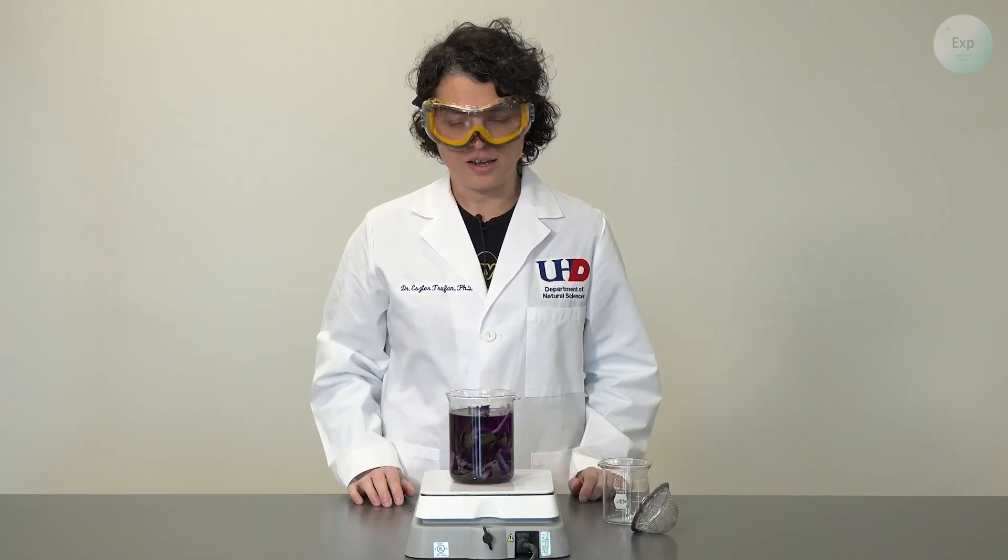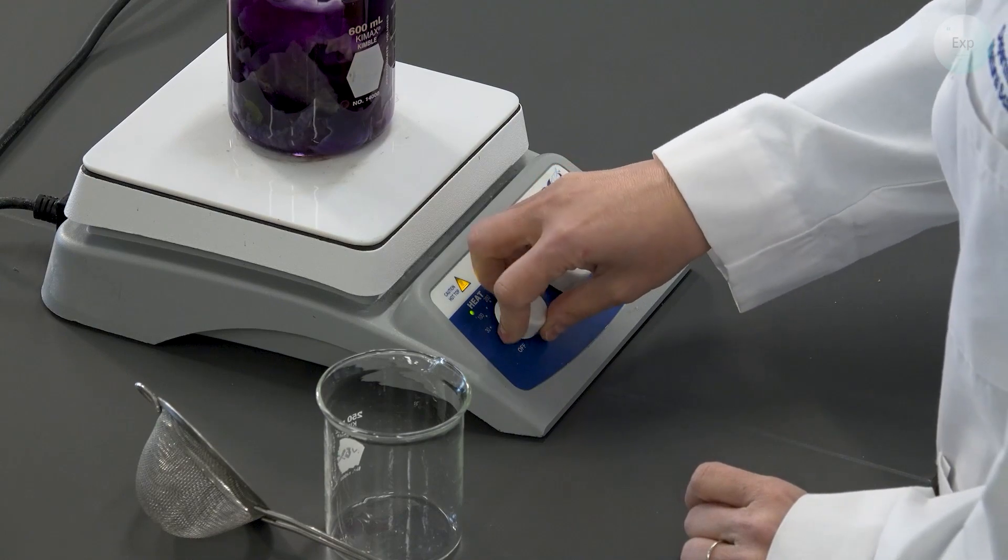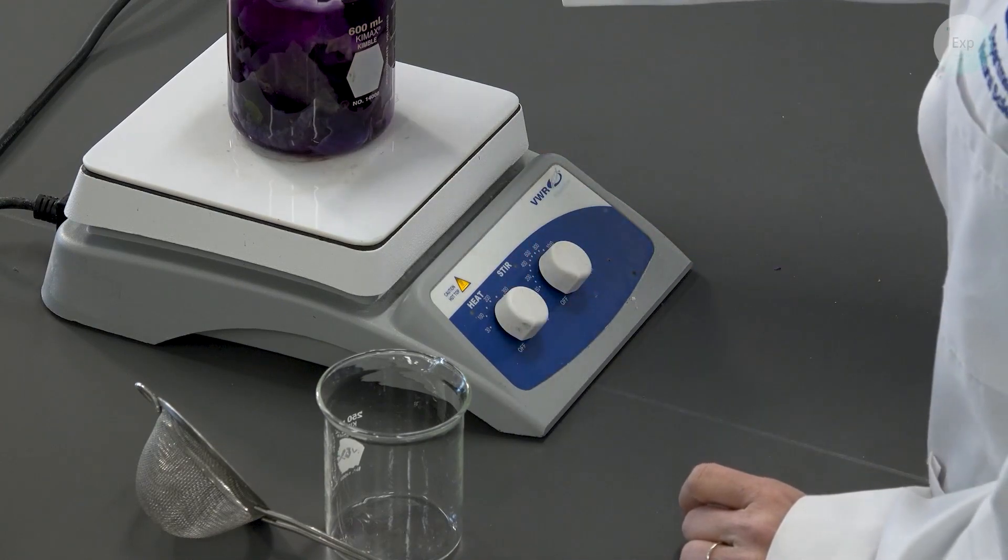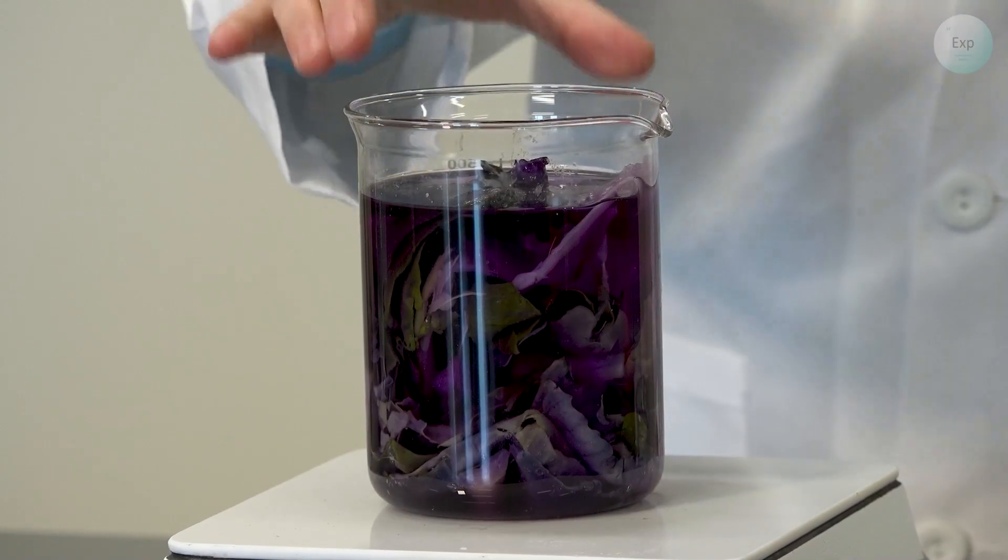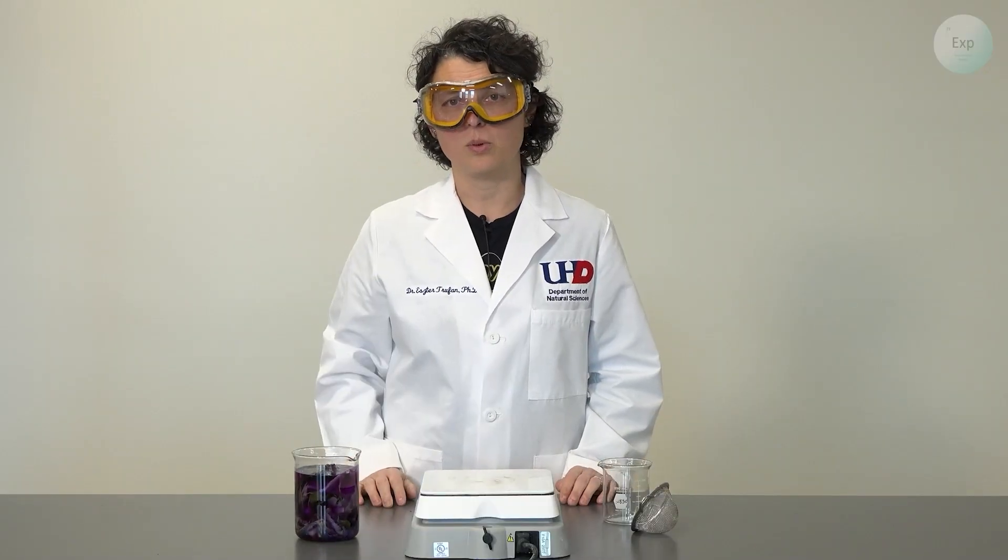When the color is dark enough, then you can turn off your hot plate. And when your beaker is cold enough to touch, then you will gently remove it next to your hot plate and let it cool off.